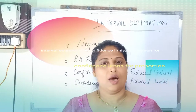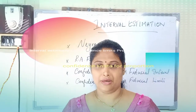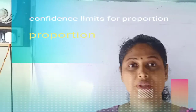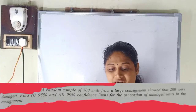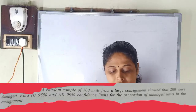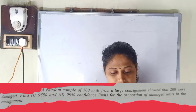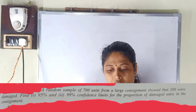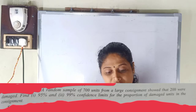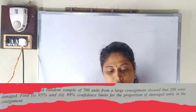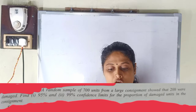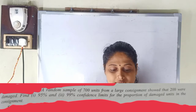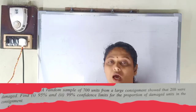Hello students. Now we have the next question. A random sample of 700 units from a large consignment showed that 200 were damaged. Find 95% confidence limits for the proportion of damaged units in the consignment.